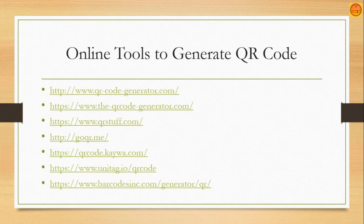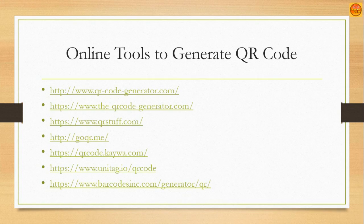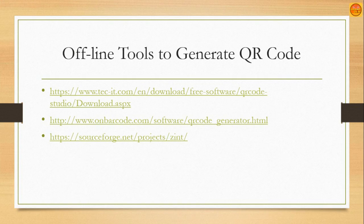Let's discuss the online tools to generate QR codes. Some of the top websites I have noted and arranged: the first one is qr-code-generator.com — I like it because it provides options to generate QR codes in different ways, and I will be discussing it in detail. There are also many other websites for generating QR codes online. For offline tools, the best one I found is Zint, which you can download from SourceForge.net and use to generate QR codes.